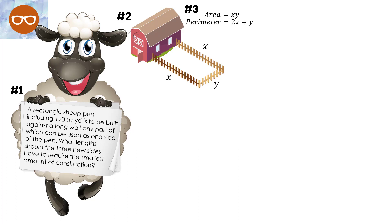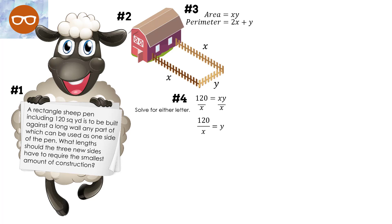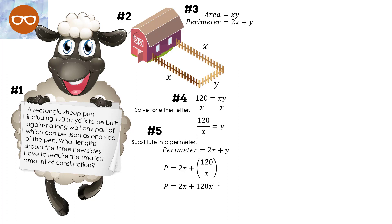The perimeter is 2x plus y. Number four, we make the area equal to 120 square yards — that was given to us. We need to solve for either x or y. I decided to solve for y, so I divide both sides by x: 120 over x equals y. Now I substitute this into the perimeter: perimeter equals 2x plus y, putting 120 over x in for y. I rewrite the fraction as 2x plus 120x to the negative one.